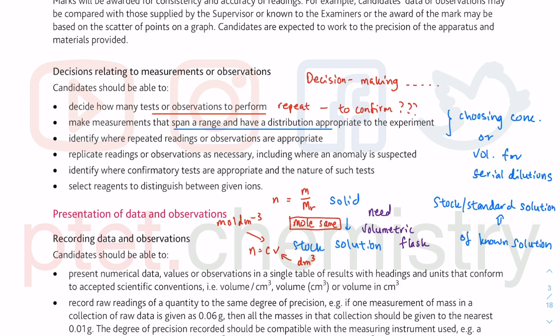For serial dilution, you need something accurate like a burette because you are starting from a solution and preparing a more dilute solution. The next consideration is where you would want to repeat readings or observations. You know about heat transfer — enthalpy changes. If you repeat them once or twice, you can ensure that your results are more reliable.